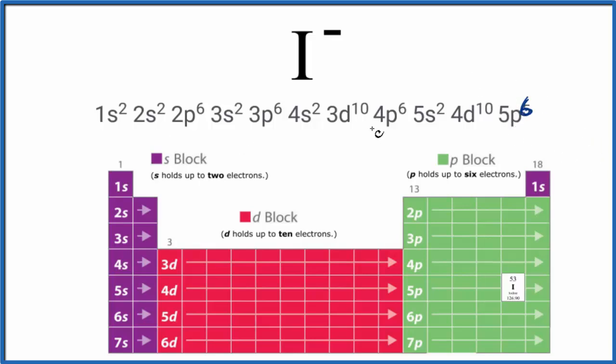This is the electron configuration for the iodide ion. Note that we still have 53 protons. The only thing that's changed is the number of electrons. So it's still iodine, but it's an ion of iodine.